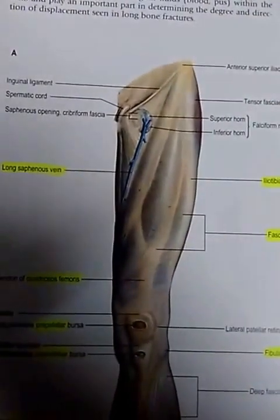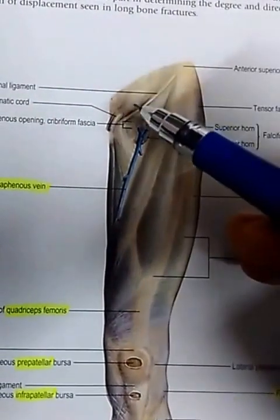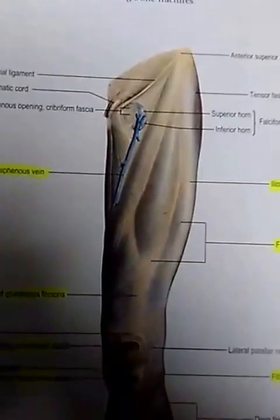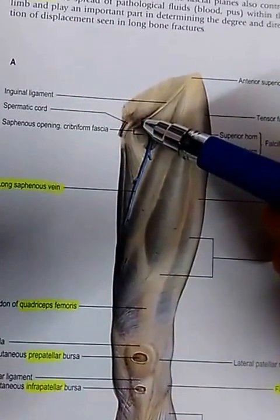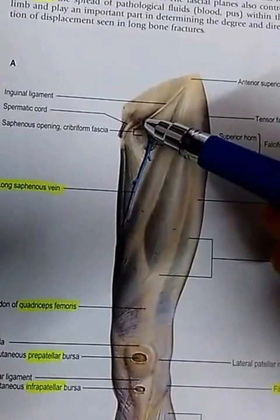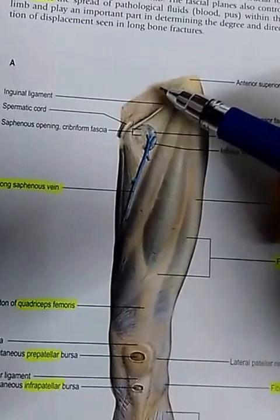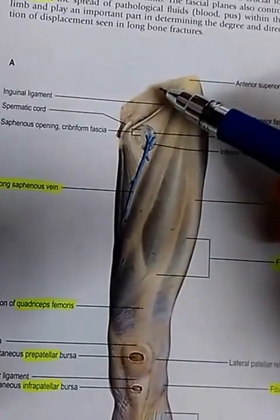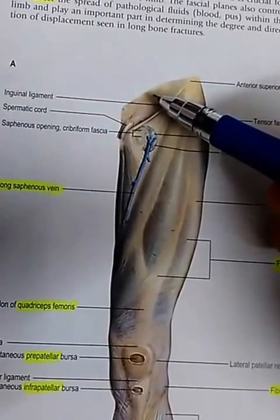The superficial inguinal ring is within the same muscle aponeurosis as the inguinal ligament. This opening — the superficial inguinal ring — is a triangular-shaped defect within the external oblique aponeurosis. In contrast, posteriorly there is the deep inguinal ring, which is oval in shape and is a defect in the fascia transversalis, which we will study later.